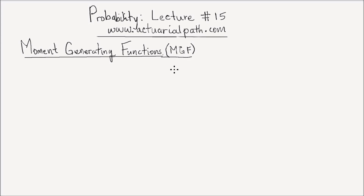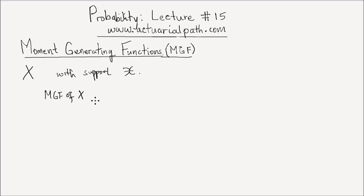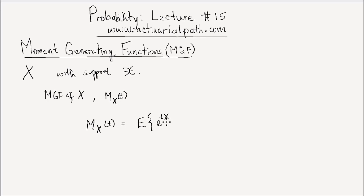Welcome back everyone. This is lecture number 15, and it's about moment generating functions or MGFs. The moment generating function, MGF of x, is denoted by m subscript x of t, and it is defined as follows. The MGF of a random variable x is equal to the expected value of e to the tx. That's the definition of MGF.